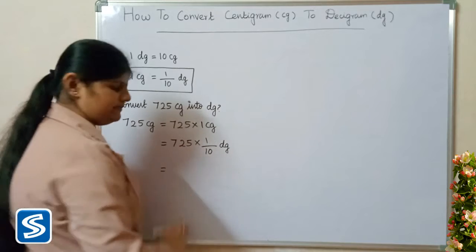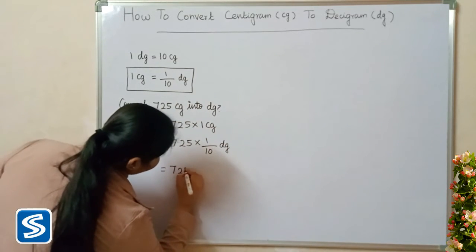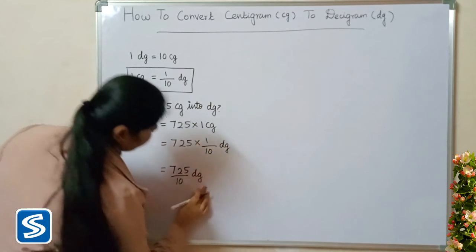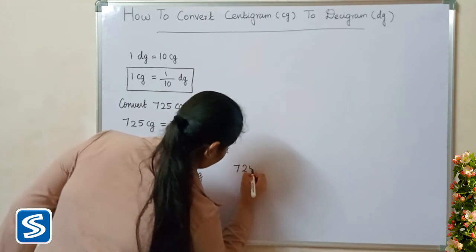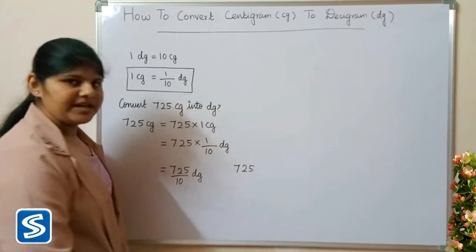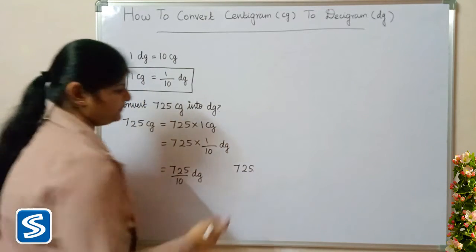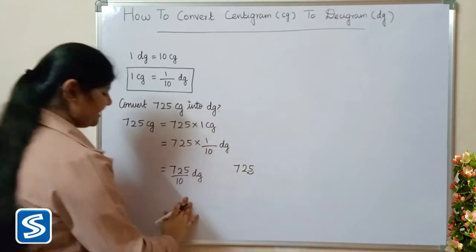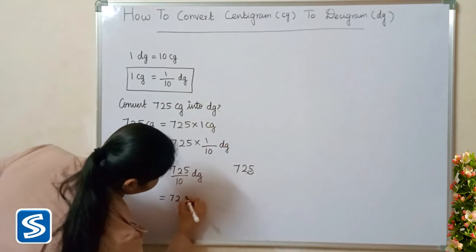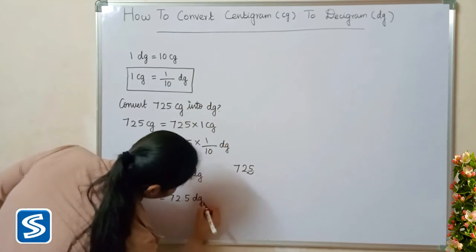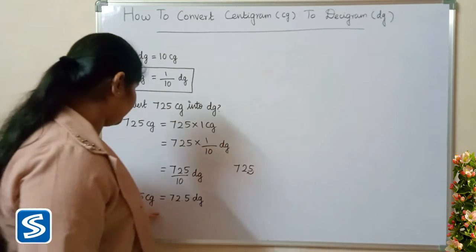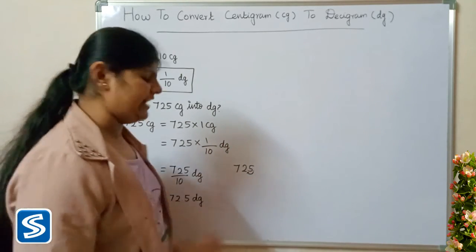725 multiplied by 1 will be 725. So 725 divided by 10 decigrams. The easy way to divide by 10 is to move the decimal point one place to the left. So when we divide 725 by 10, our answer will be 72.5 decigrams. So 725 centigrams is equal to 72.5 decigrams.